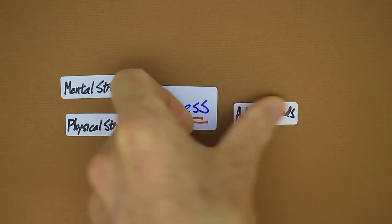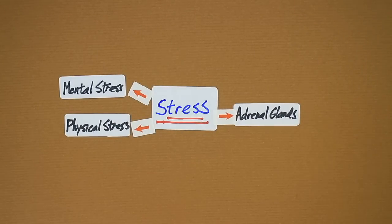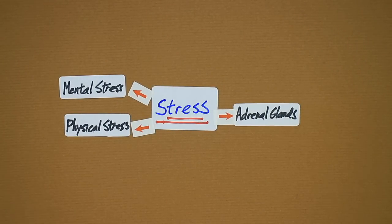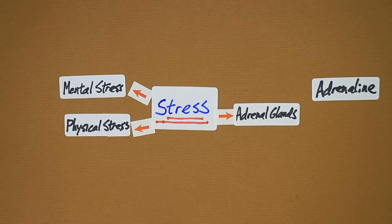And then when we're talking about stress, we also need to talk about the adrenal glands. The adrenal glands are basically two small glands that sit above the kidney.